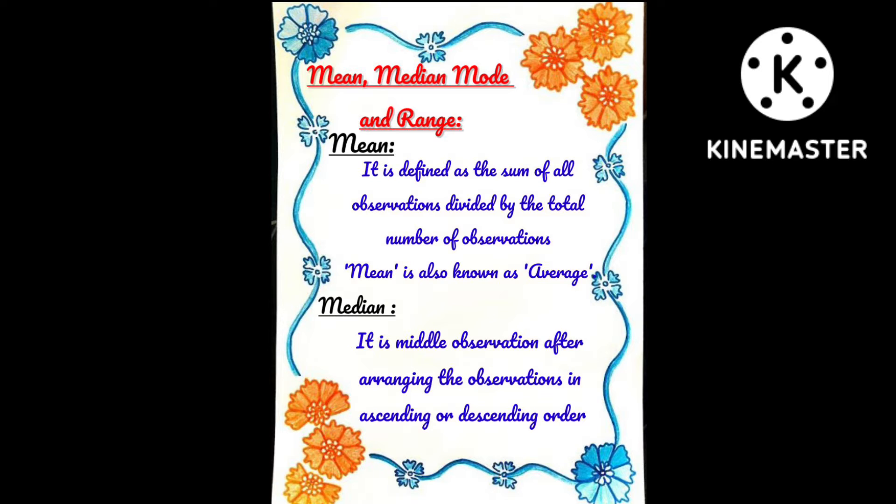The next page is mean, median, mode and range. The first one is mean. It is defined as the sum of all observations divided by the total number of observations. Mean is also known as average.